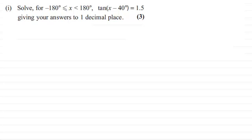Okay, welcome back then if you had a go. So first of all, let's put down the question. We've got tan(x - 40°) = 1.5. What I want to do is take the inverse tan of both sides, and that means that x - 40° = tan⁻¹(1.5).